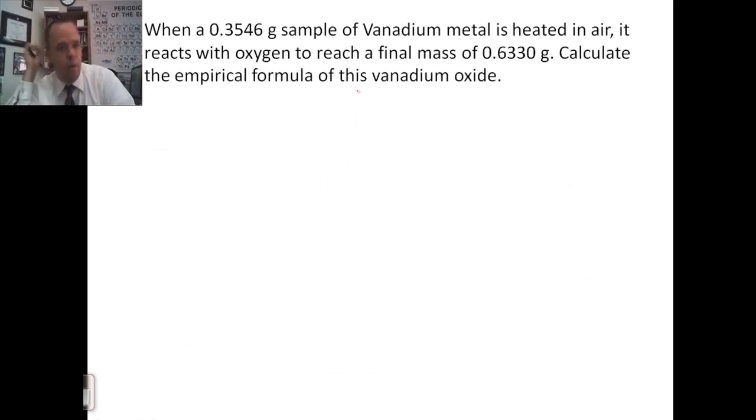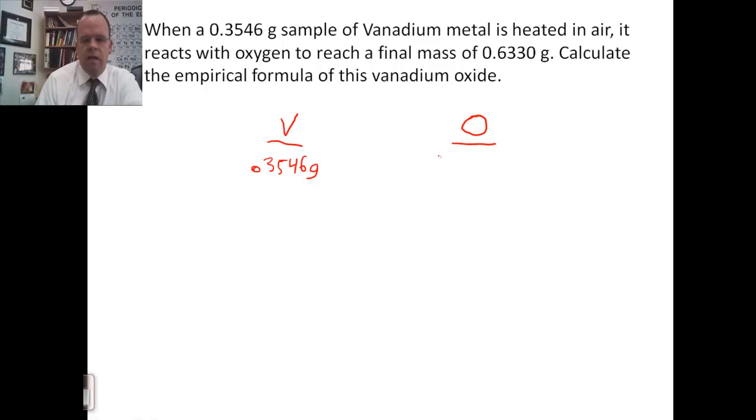In this first example, we have a 0.3546 gram sample of vanadium, which is heated in air, reacts with oxygen, and has a final mass of 0.6330. We want to calculate the empirical formula of vanadium oxide. So, I know whenever I'm doing this, I'm going to make columns for each element: vanadium and oxygen. I know vanadium, in this case, is 0.3546 grams. To find oxygen, I'm going to need to take the total mass, 0.6330, subtract the mass of vanadium, and get the mass of the individual oxygen atoms, which would be 0.2784 grams.